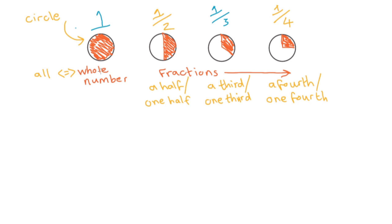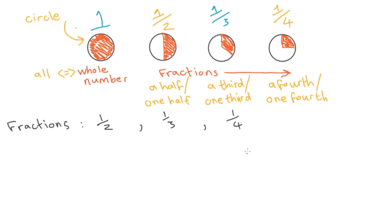This one is called a fourth. Or you can say one fourth. So, we have a whole number here — one. Now, you know other whole numbers: one, two, three, four, ten, twenty, one hundred. These are all whole numbers. Now, these fractions: we have a half, a third, and a quarter. You can show these in a different way.